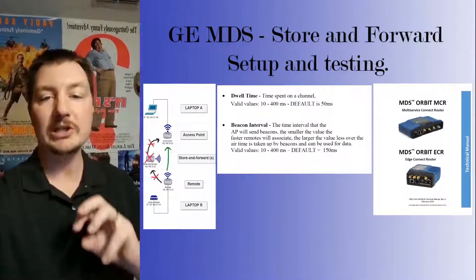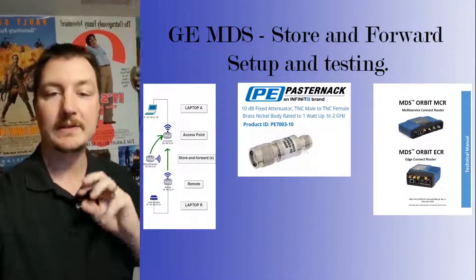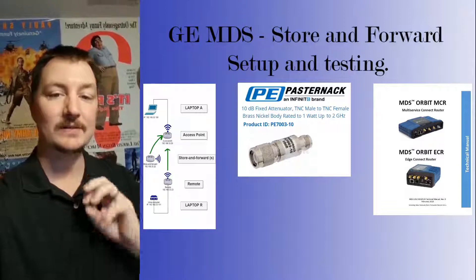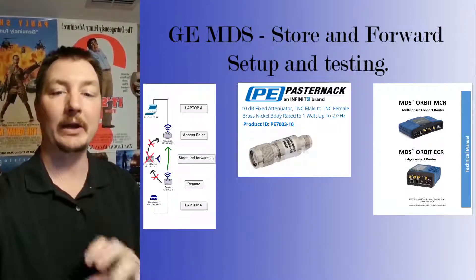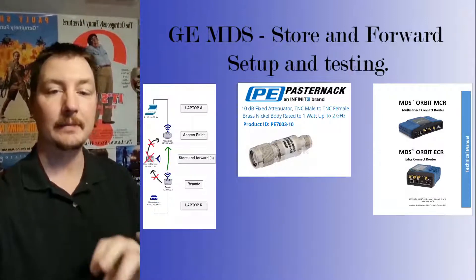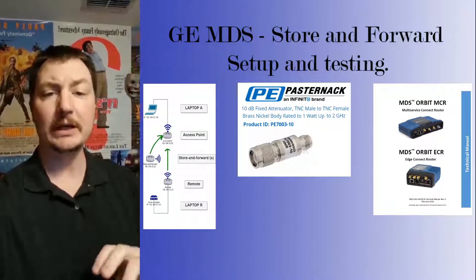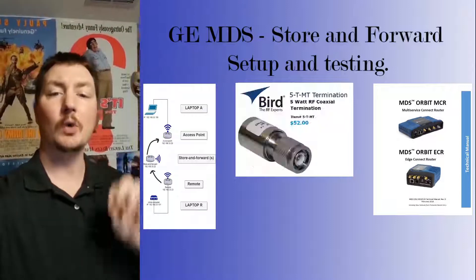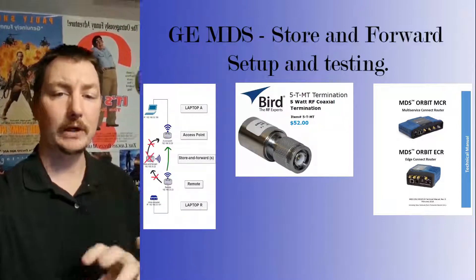Real quick video on the GEMDS Orbit platform. This is an unlicensed 1 watt, 900 megahertz system for your telemetry, water, wastewater, and industrial markets.